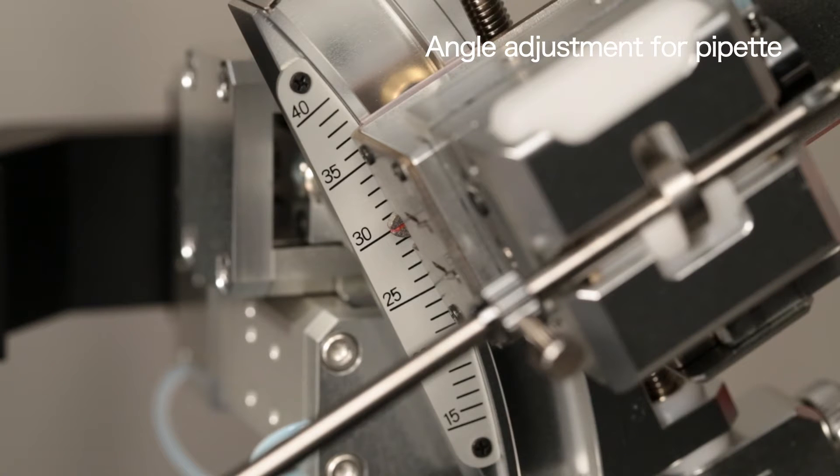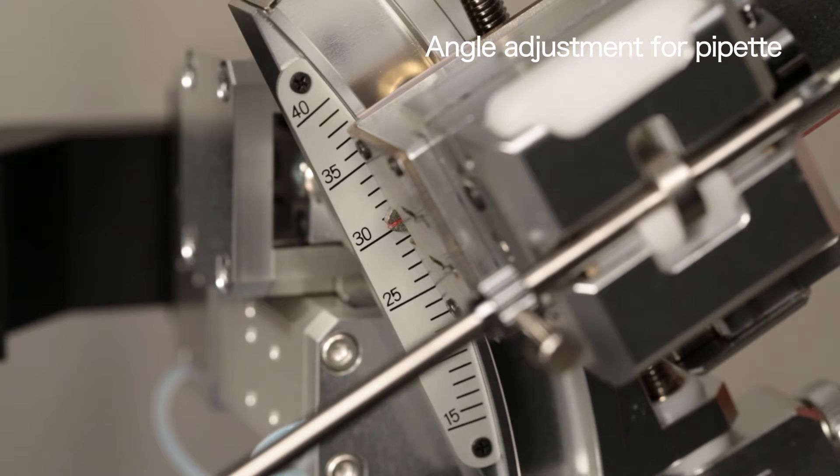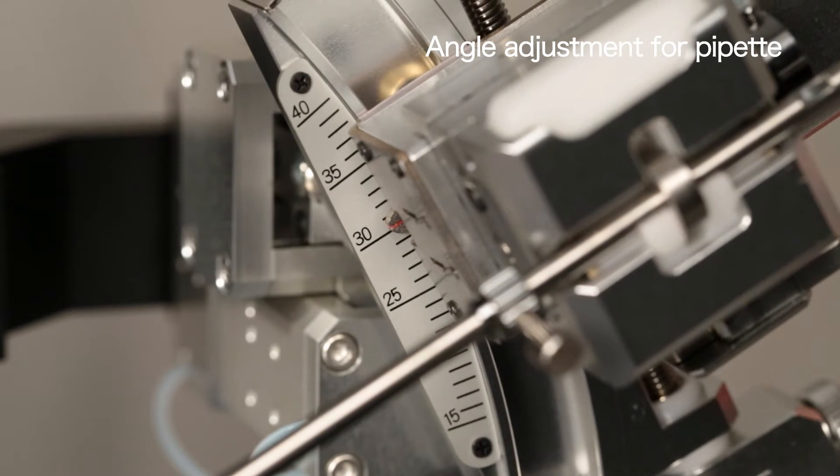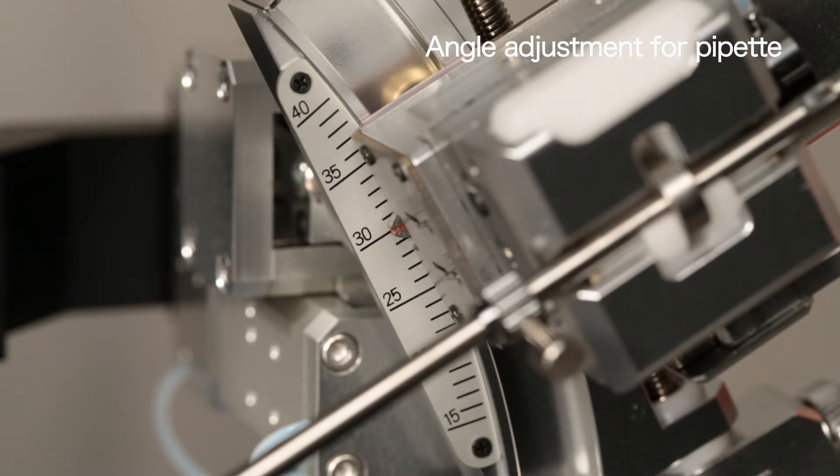Commercially available micropipettes often suffer from imprecise bending angle. The included angle gauge enables you to adjust for deviation to the exact angle degree.